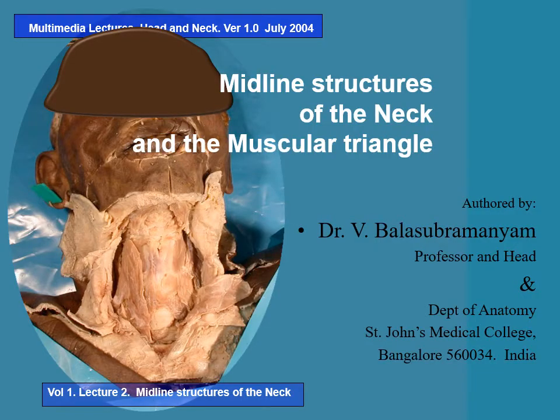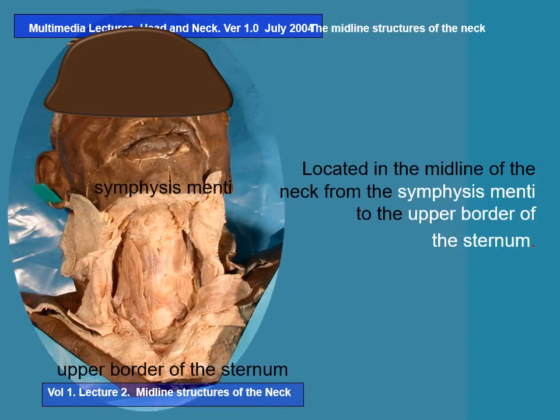Hello viewers, welcome to this edition of Multimedia Lectures. This lecture is entitled Midline Structures of the Neck and the Muscular Triangle. By the term midline structures, we mean the series of structures located in the midline of the neck, right from the symphysis menti at the upper end to the upper border of the sternum. We will identify the structures in sequence from above downwards.